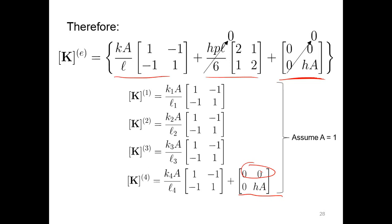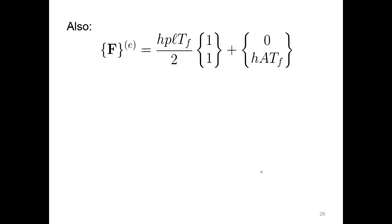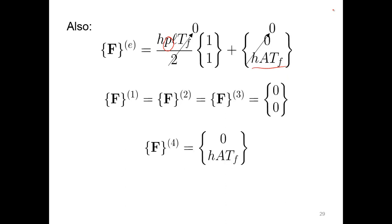We're going to assume the area is one. For the forcing function, we have convection from the surfaces, the perimeter of our wall, but that's an infinite wall, so we'll ignore this term. We also have convection from the tip, but only in one case. For the first three elements, those are all zero. But for the fourth element, we include just the tip, because the outer surface of the wall interacts with the fluid.